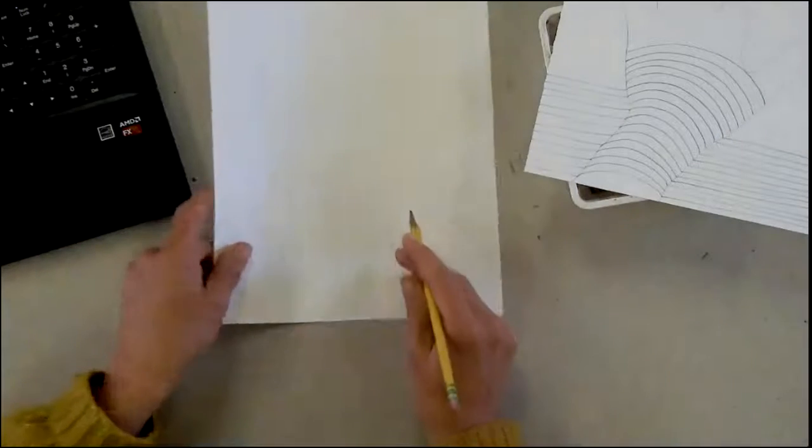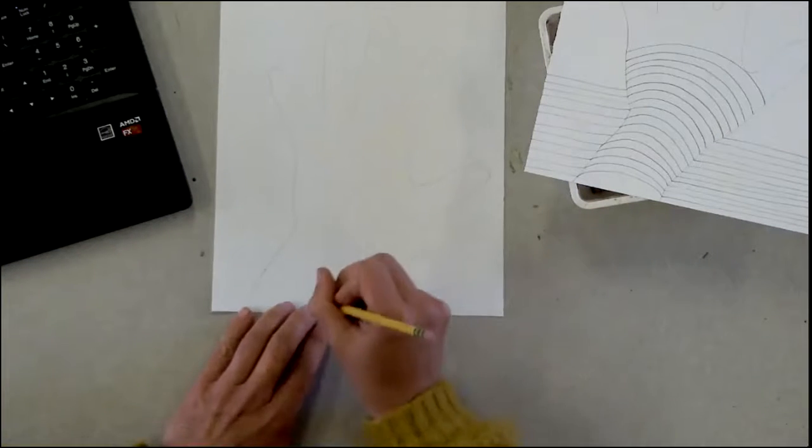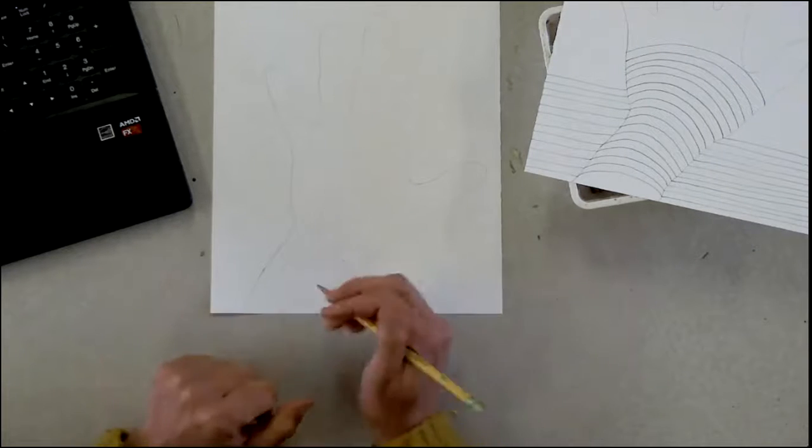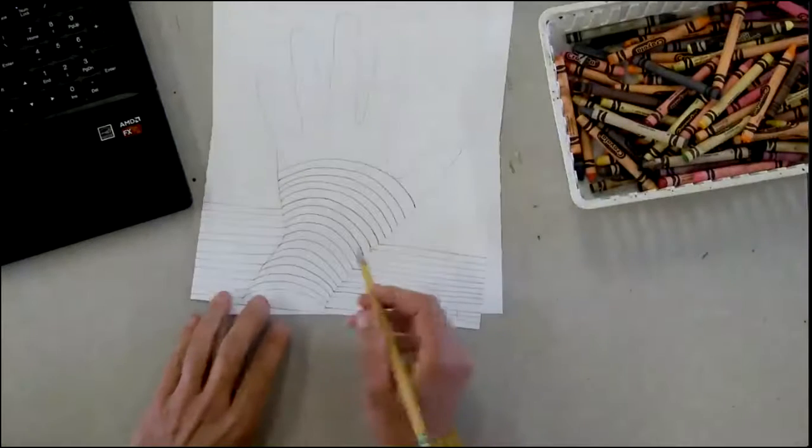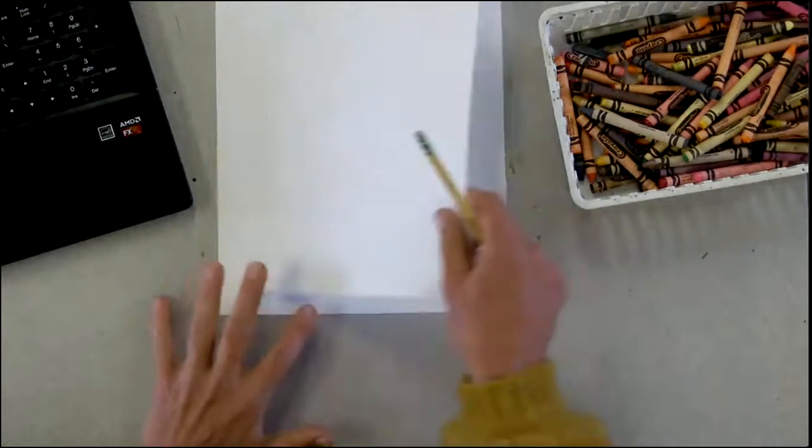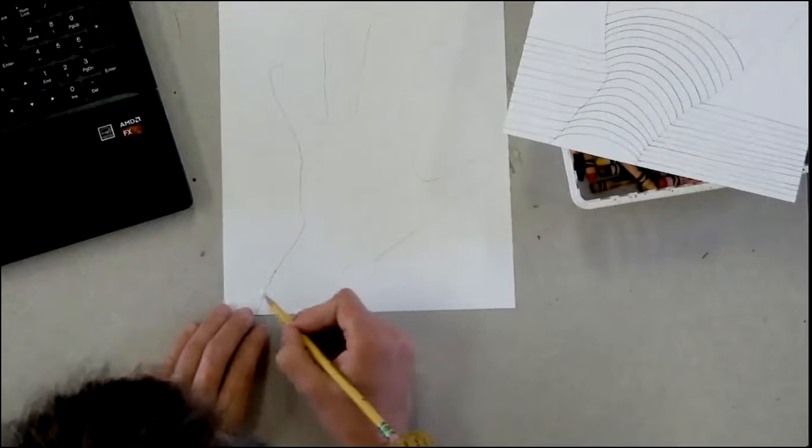And whatever you do, you don't want to darken the outline. Don't darken the outline right now, please. In fact, we're never going to darken the outline. So you can see on this one, I have these curved lines that are on my hand. And that is the first thing you need to draw.